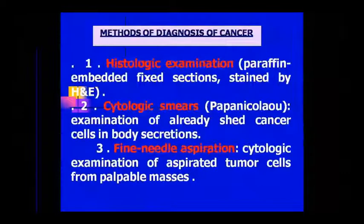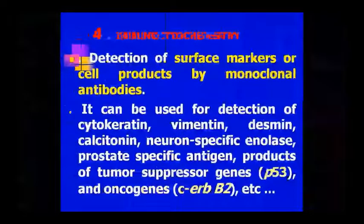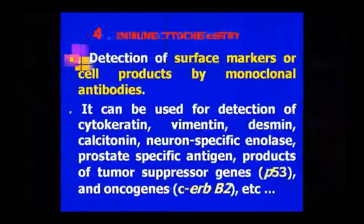Besides these, we can detect cancer using immunocytochemistry. Surface markers or cell products which are detected by monoclonal antibodies include cytokeratin, vimentin, desmin, calcitonin, neuron-specific enolase, prostate-specific antigen, tumor suppressor gene products like P53, and oncogenes. These are markers that are detected and it is a very commonly used method.